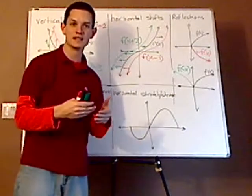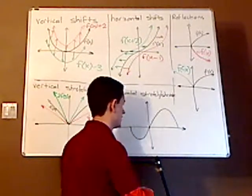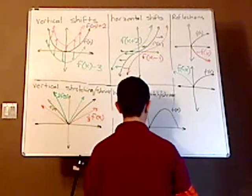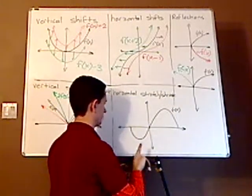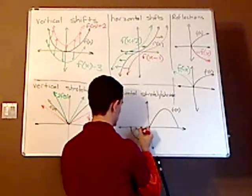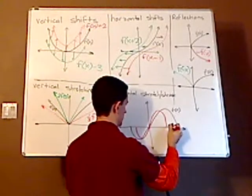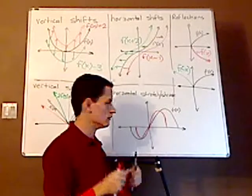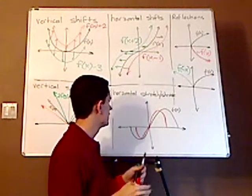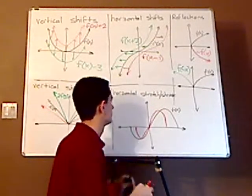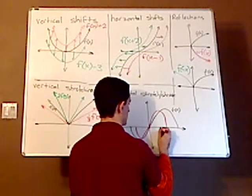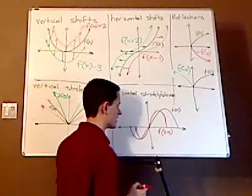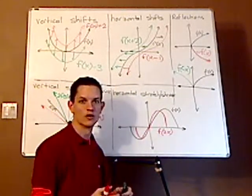Now, what if it's on the inside? If it's on the inside, f of x, and you have something like this, right, it's shrinking. So since it's shrinking on the inside, it's going to be something like f of 2x. It's going to be larger than one.